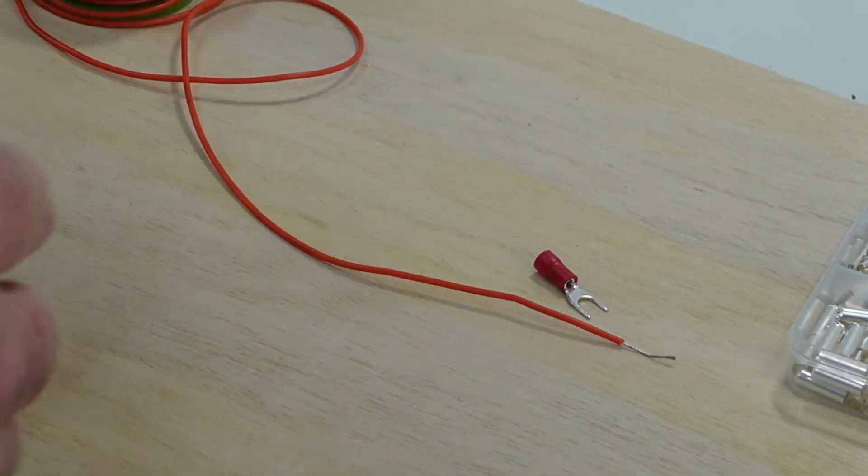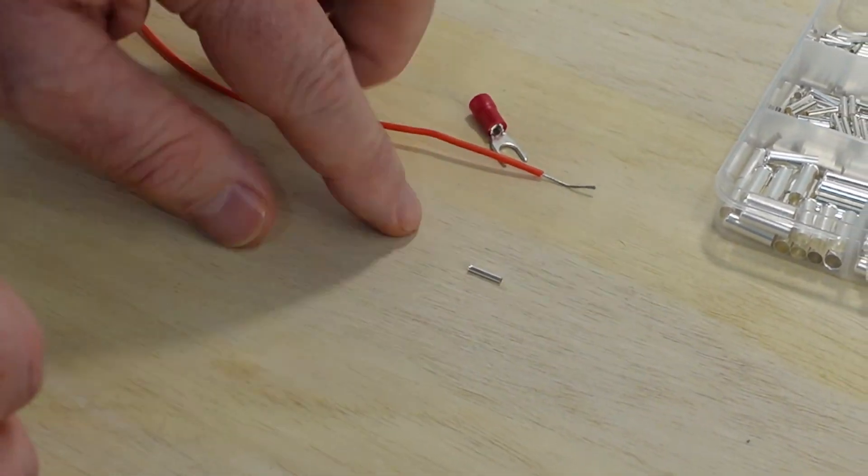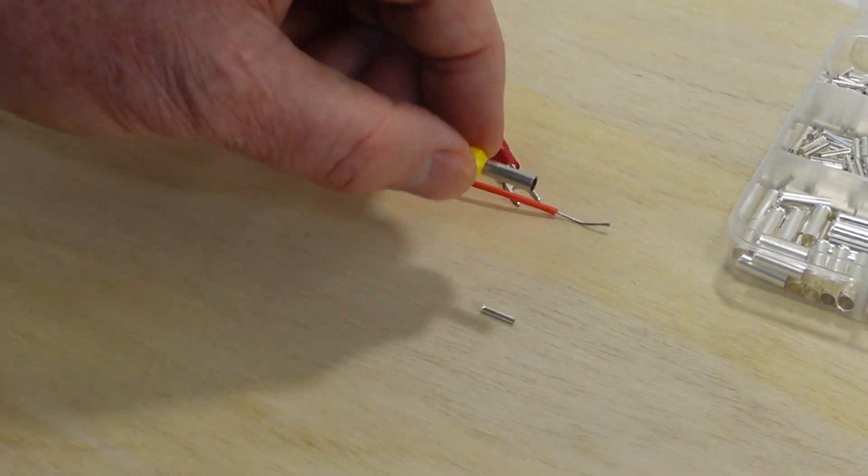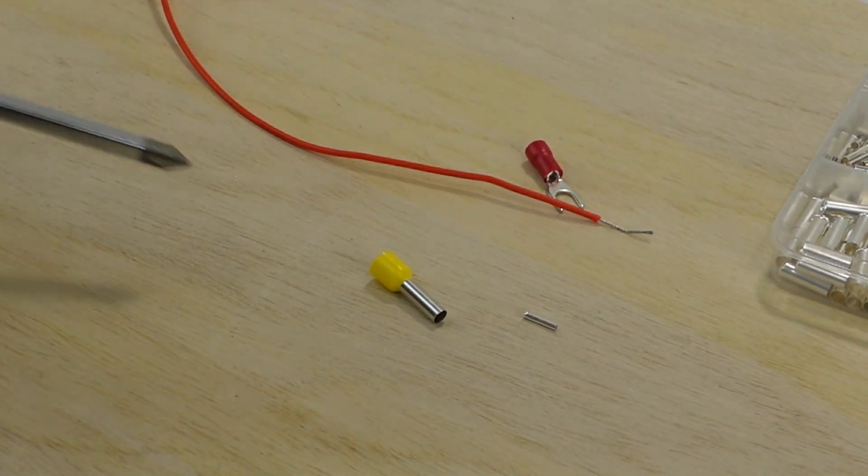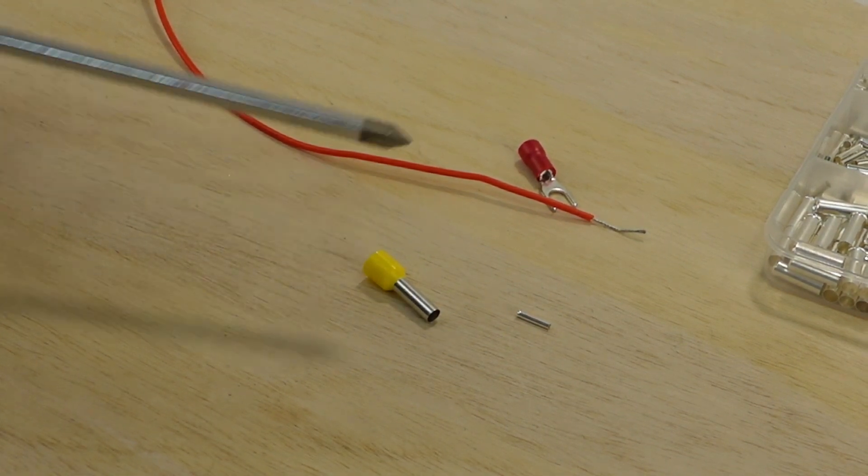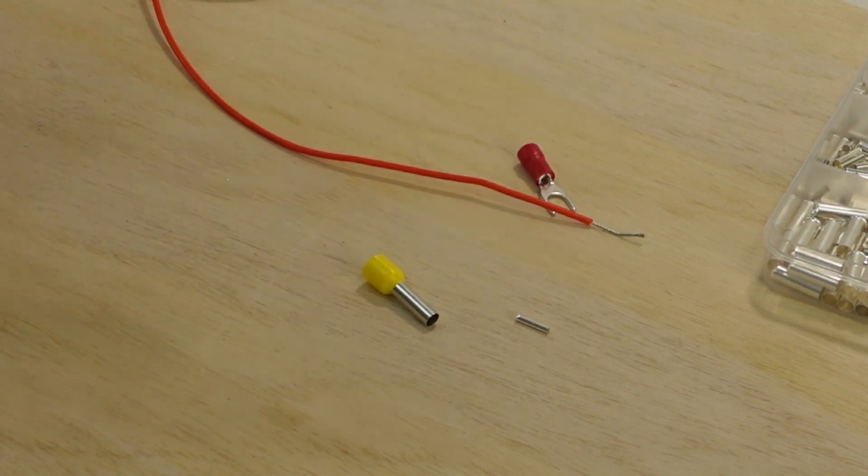Oh, one thing I wanted to point out to you is I made a point of saying that these ferrules should be uninsulated. Here's a ferrule. This is a very big ferrule just so you can see it on camera. But this is a ferrule with insulation. So right here, that yellow plastic bit, that is the insulation. This won't work for this technique. And that's why you're using ferrules that have no insulation.